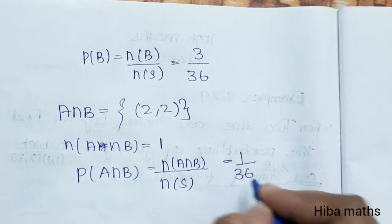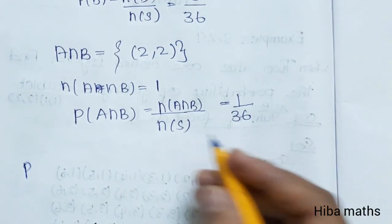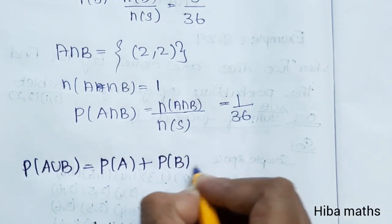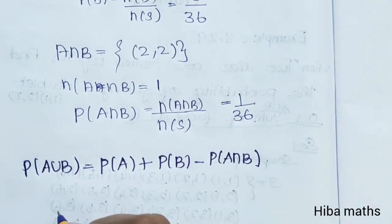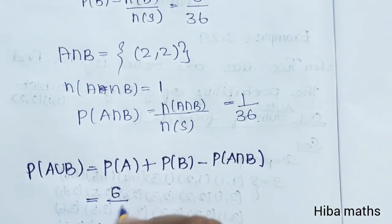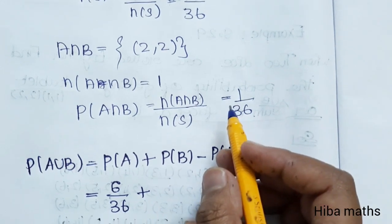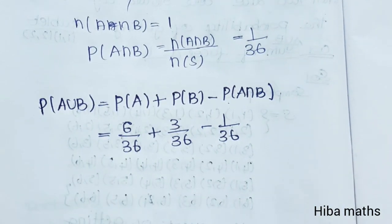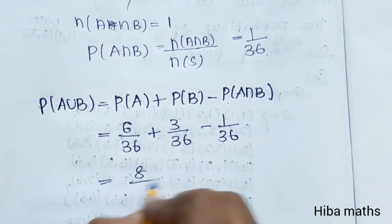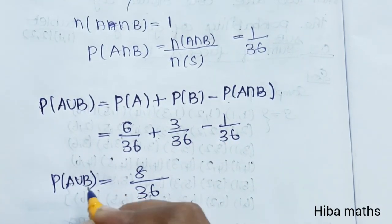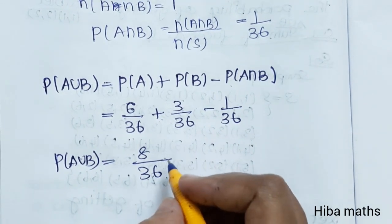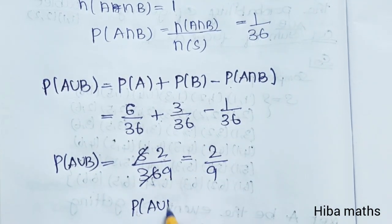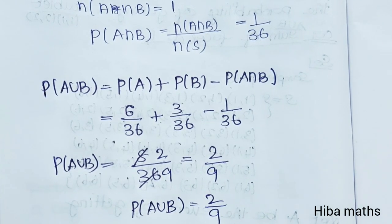That is equal to 1 by 36. Now let's substitute the formula. P of A union B formula is 6 by 36 plus P of B is 3 by 36 minus P of A intersection B is 1 by 36. The calculation is 6 plus 3 is 9, 9 minus 1 is 8. So 8 by 36 simplifies to 2 by 9. The final answer is A union B is 2 by 9. Thank you so much for watching.